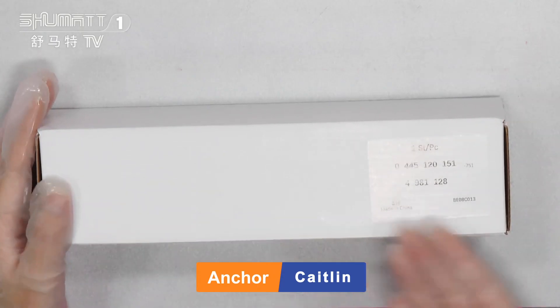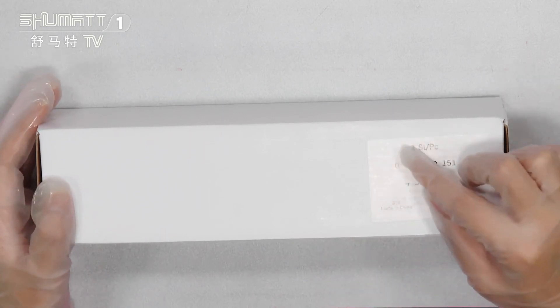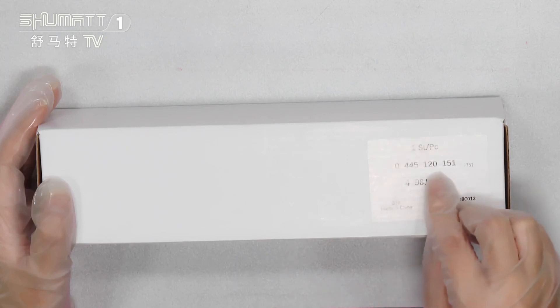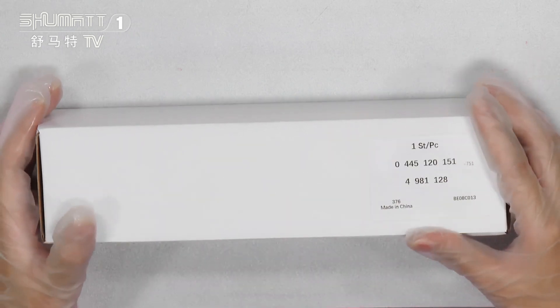Here, as you can see, this is a neutral white box label, one side each pieces, product code 0445120151. And if you want your own label, packaging bag, and so on, contact us, customize the services.